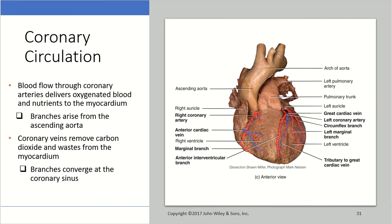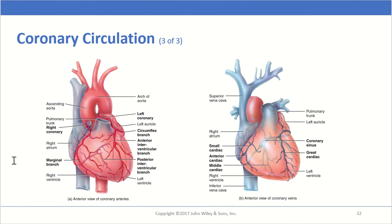We then have coronary circulation, which is basically the flow of blood through coronary arteries that delivers oxygenated blood and nutrients to the myocardium. The branches arise from the ascending aorta, and the coronary veins remove carbon dioxide and waste produced by the myocardium, converging at the coronary sinus. Here you can see all of the coronary circulation — the various veins and arteries that supply the heart with oxygen and remove waste or CO2 produced by cardiac tissue.